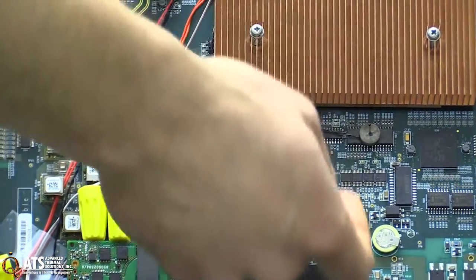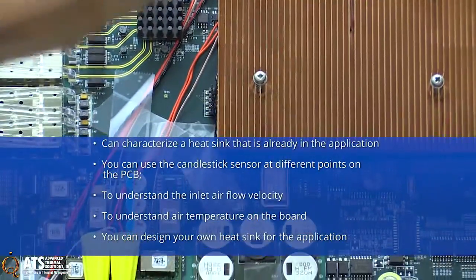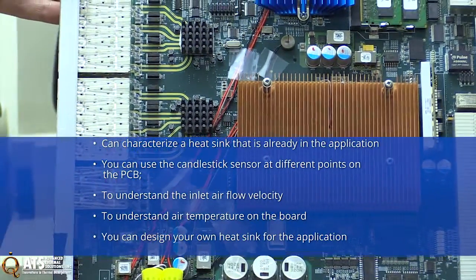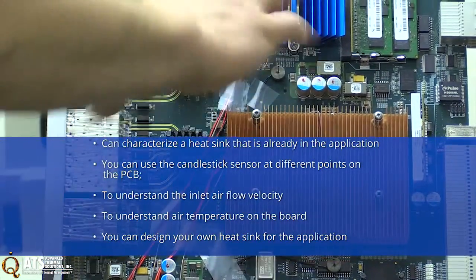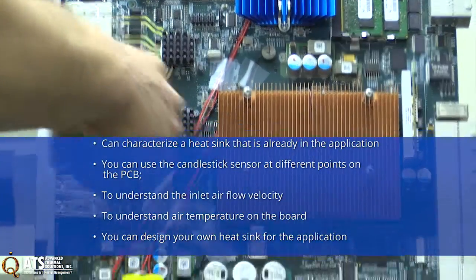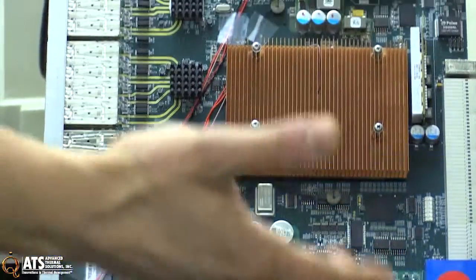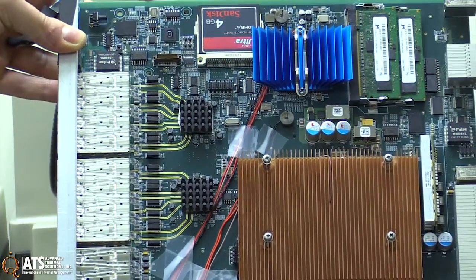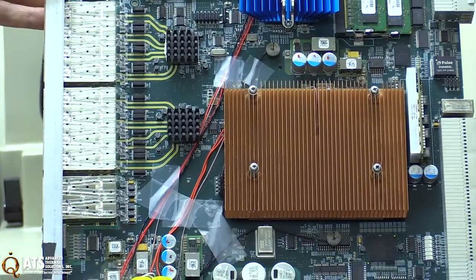So here we have a candlestick sensor so we can measure the inlet air velocity and inlet air temperature. This way you can do one of two things. You can characterize a heat sink that's already in the application or you can use the candlestick sensor to design a heat sink before it's on the board. So you can put candlestick sensors at different points of interest on the board and you can determine what the inlet air flow velocity would be to the heat sink and the temperature. As you may know, this is very important to heat sink design. Those are two very important parameters along with power and others.